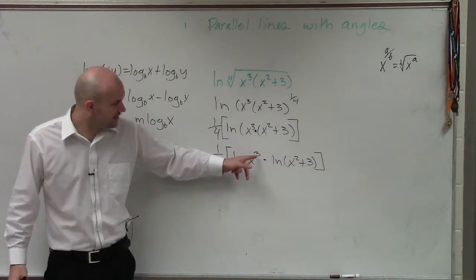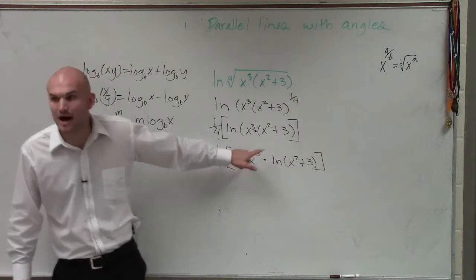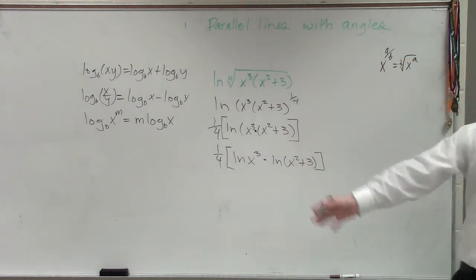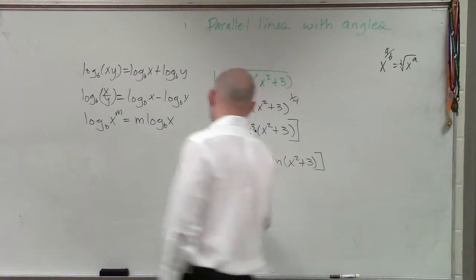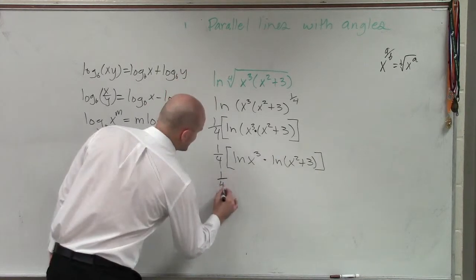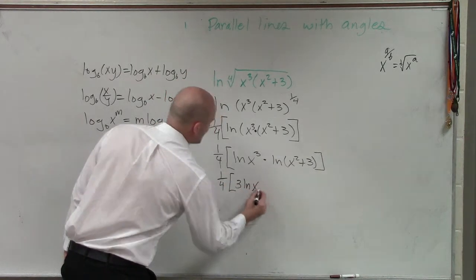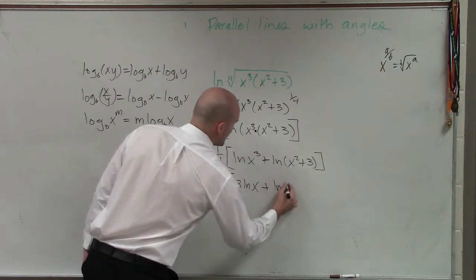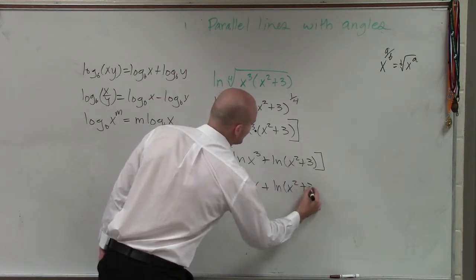Then we look at this again, and you notice that, well, again, I have this power of what I'm taking the natural logarithm of. I can bring that down as well. So final answer would be three-fourths ln of x. Oh, I'm sorry. That's supposed to be plus. Plus one-fourth ln of x squared plus 3.